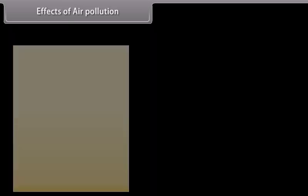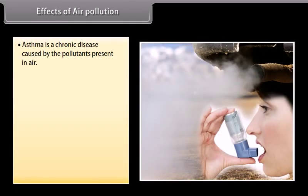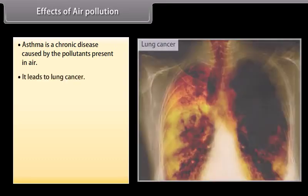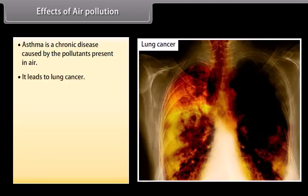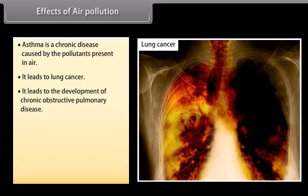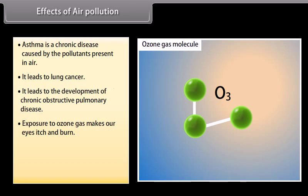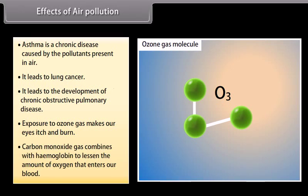The effects of air pollution include: asthma, a chronic disease caused by pollutants present in the air; it leads to lung cancer; it leads to the development of chronic obstructive pulmonary diseases. Exposure to ozone gas makes our eyes itch and burn. Carbon monoxide combines with hemoglobin to lessen the amount of oxygen that enters our blood.